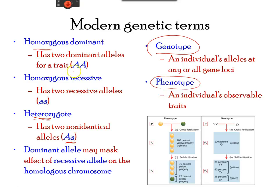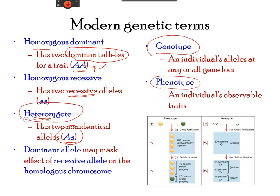If both alleles were dominant for a trait, it was considered to be a homozygous dominant allele — for example, AA. If both alleles were recessive, they would be expressed as lowercase aa. If the two alleles were not identical, such as capital A and small a, it was considered to be a heterozygous allele. The physical expression of this combination will result in the dominant allele.